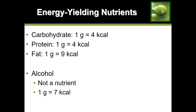Now let's look at the amount of calories we get from the nutrients that actually are nutrients. We compare by looking at how many calories come from one gram of each. Carbohydrates provide four calories per gram. Protein also provides four calories per gram. Fats contain more calories — each gram of fat provides nine calories.